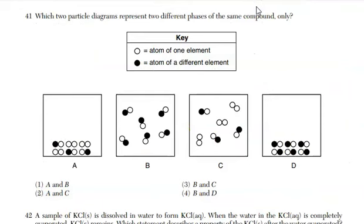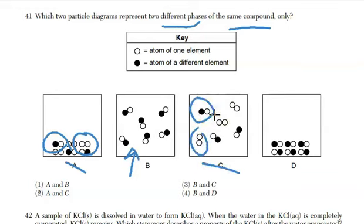For question 41, which two particle diagrams represent two different phases of the same compound? It cannot be choice A. This is a mixture. I have an element represented by the two open circles and I have a compound represented by one that's shaded in and one that's open. B. This is a representation of a compound in the gas phase. Look at C. Again, I have a mixture of two gases. One that's a diatomic element and then a compound. And then finally D. This would be a compound as a solid because it's its own volume. It's not taking up the volume of the container. In other words, our answer here for 41 is choice 4, B and D.